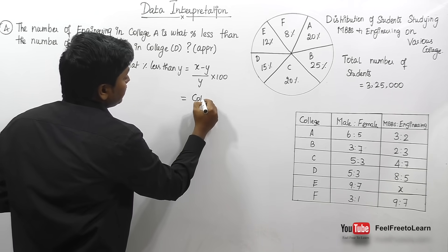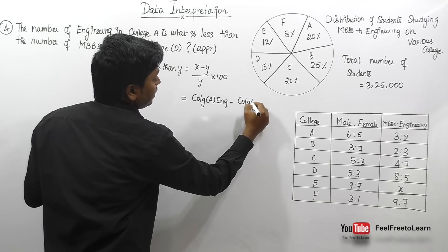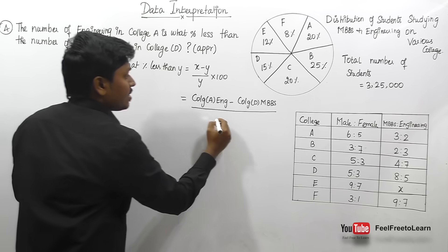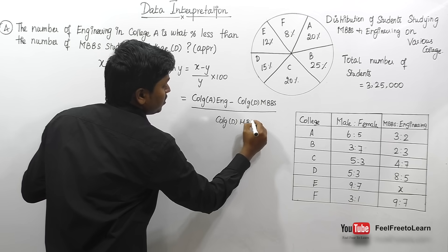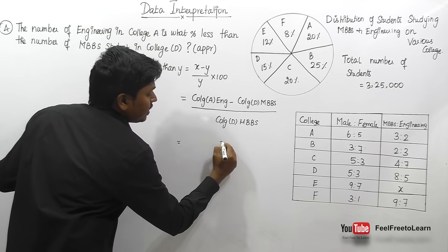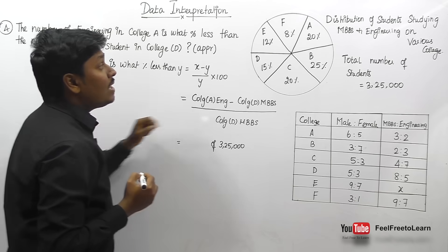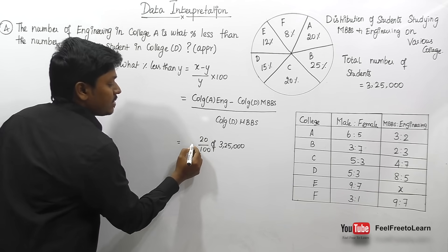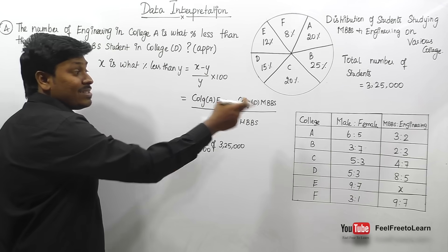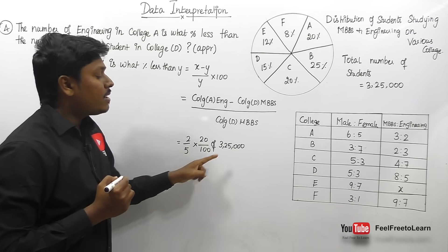College A engineering: 3,25,000 × (20/100) × (2/5). The engineering ratio in college A is 2 out of (3+2) = 5. College D MBBS: 3,25,000 × (15/100) × (8/13). The MBBS ratio in college D is 8 out of (5+8) = 13. We apply the formula: (college A engineering − college D MBBS) / college D MBBS × 100.